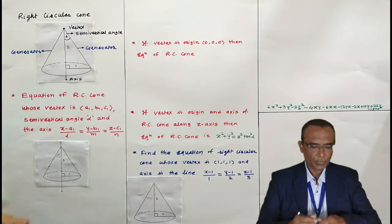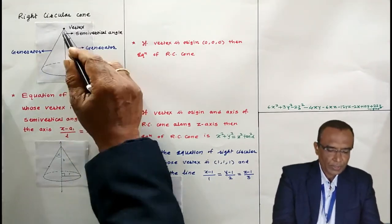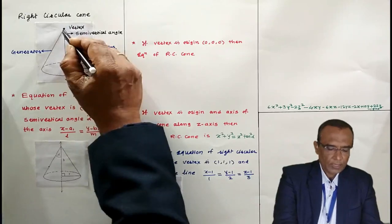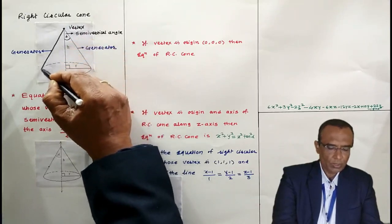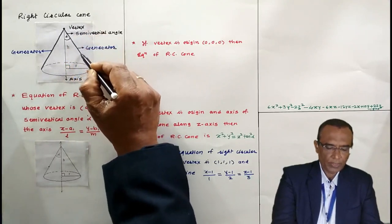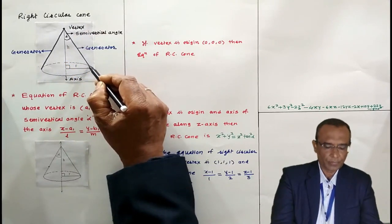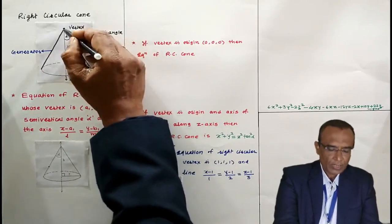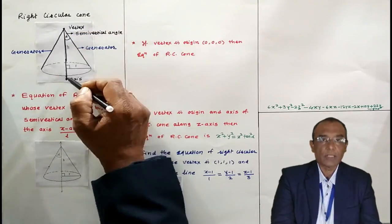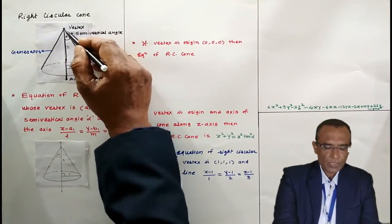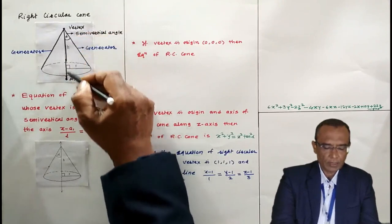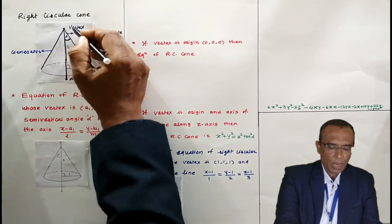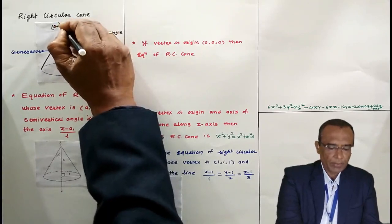Diagrammatically I would like to explain: in this right circular cone, this is the vertex, and this is the generator of the cone — there are infinite number of generators of the cone. This vertical line is called the axis, the axis of the right circular cone, and the angle between the generator and the axis of the right circular cone is denoted by alpha, and the vertex I am denoting by A1, B1, C1.